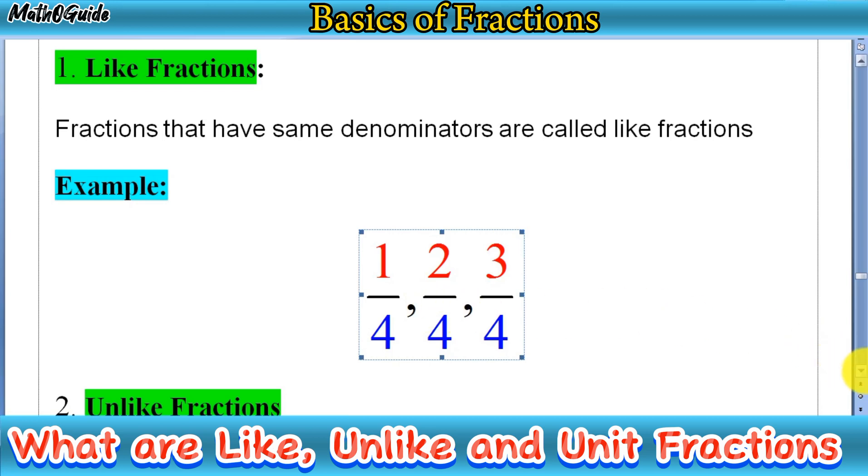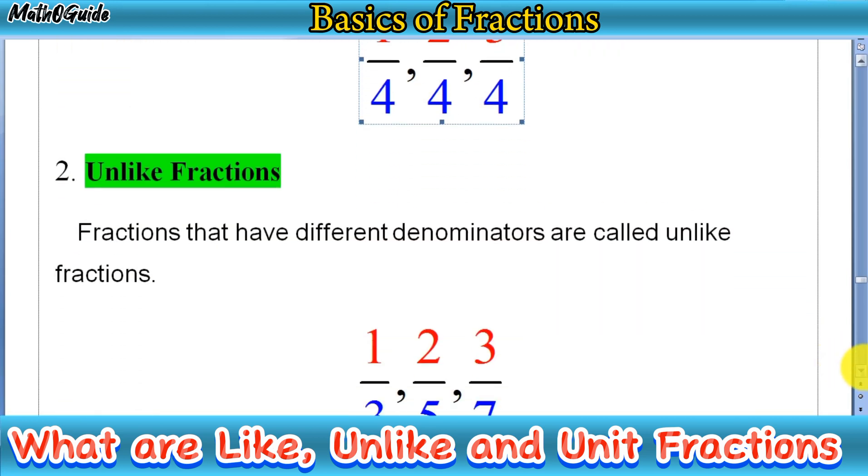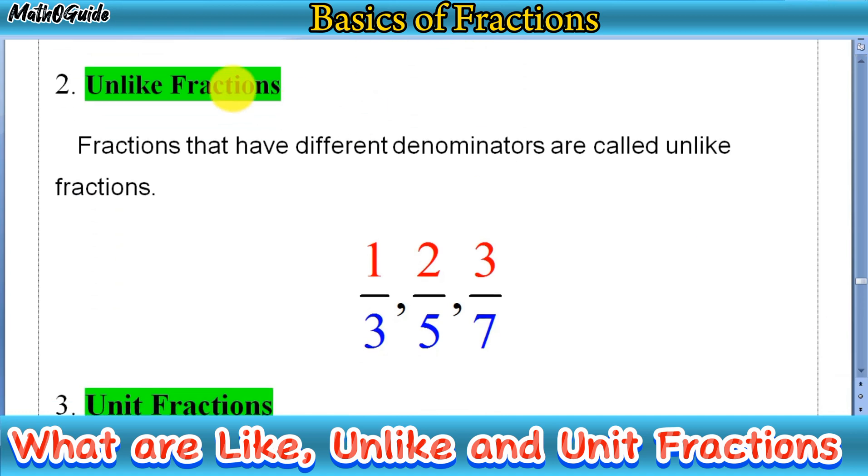In the next type, we have unlike fractions. Unlike fractions are opposite of like fractions. As you can see here, the definition is: fractions that have different denominators. We have denominators, the number below the bar.